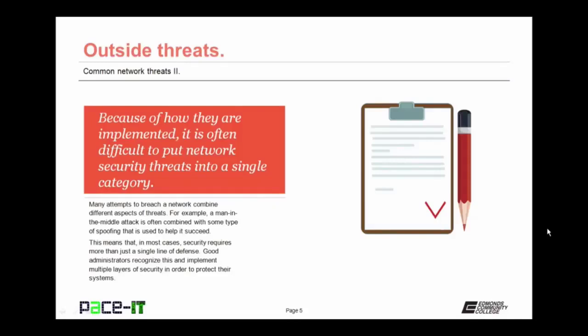Because of how they are implemented, it is often difficult to put network security threats into a single category. Many attempts to breach a network combine different aspects of different threats. For example, a man-in-the-middle attack is often combined with some type of spoofing to help it succeed. That means that in most cases, security requires more than just a single line of defense. Good administrators recognize this and implement multiple layers of security in order to harden and protect their systems.